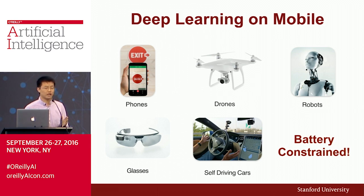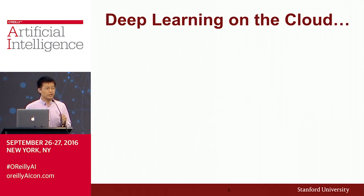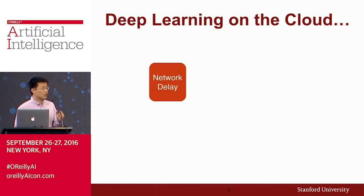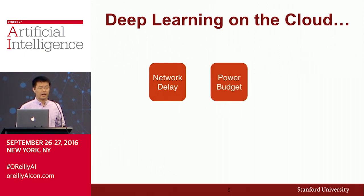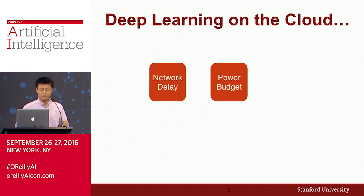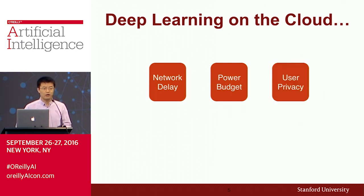But in all these scenarios, the devices are small and battery constrained. So what about running Deep Learning on the cloud? Can we transfer the data to the cloud and then receive the result? The difficulty is that it suffers from network delay, the power budget and TCO of running a large data center, and also user privacy — once you upload the photo to the cloud.